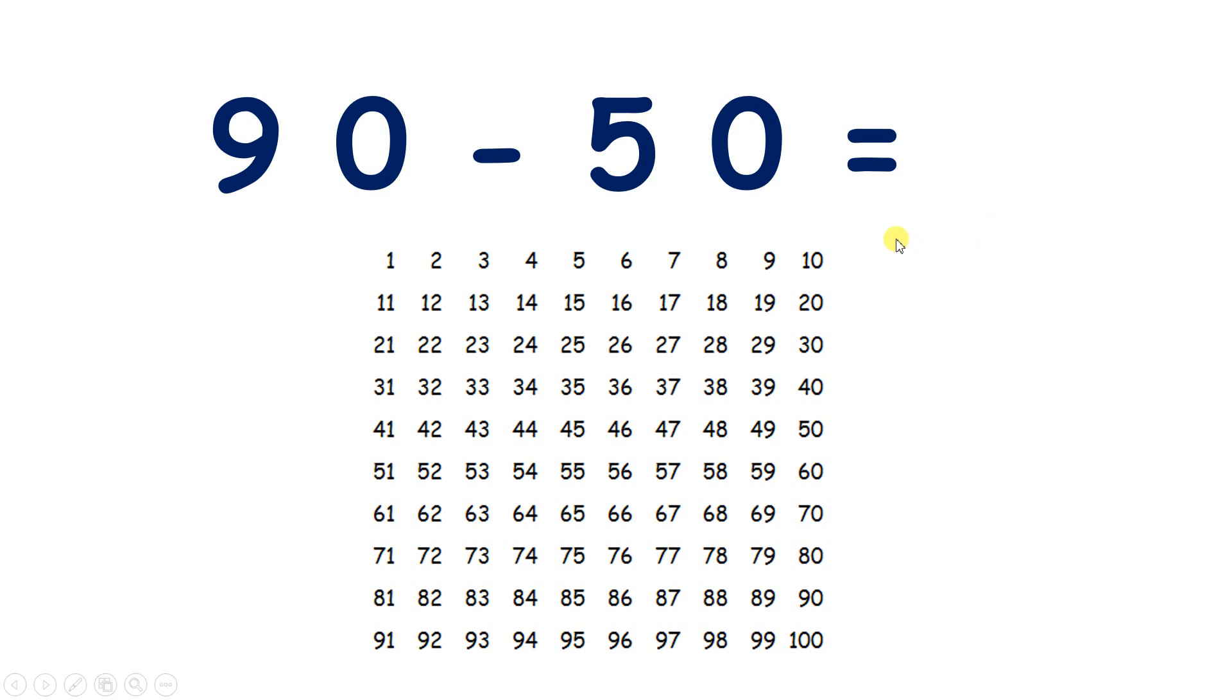Now 90 take away 50, so we find 90, and we're taking away 50, or five tens. So we go up 1, 2, 3, 4, 5 places, and we get to 40.